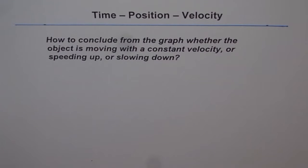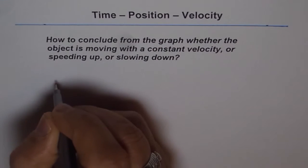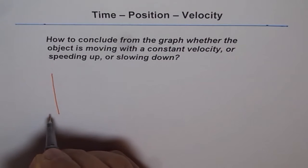I hope by now you have understood that velocity is the rate of change of position with time. So I'll draw three different graphs here and then we'll figure out how to determine whether the object has constant velocity or is speeding up or slowing down. Basically I'll draw three time-position graphs.